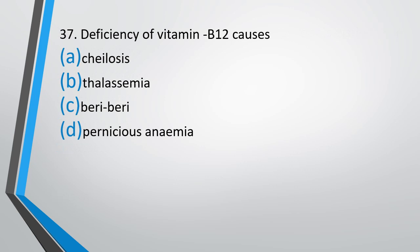Question number 37: Deficiency of vitamin B12 causes — chelosis, thalassemia, beriberi, or pernicious anemia. The correct answer is option D, pernicious anemia.